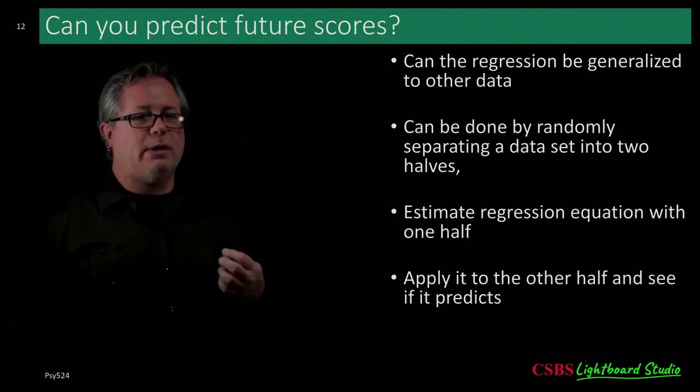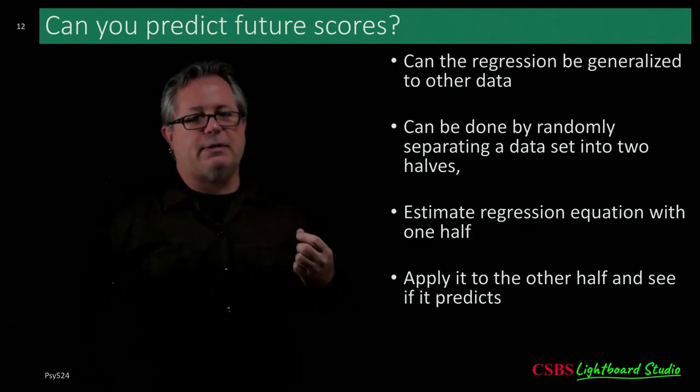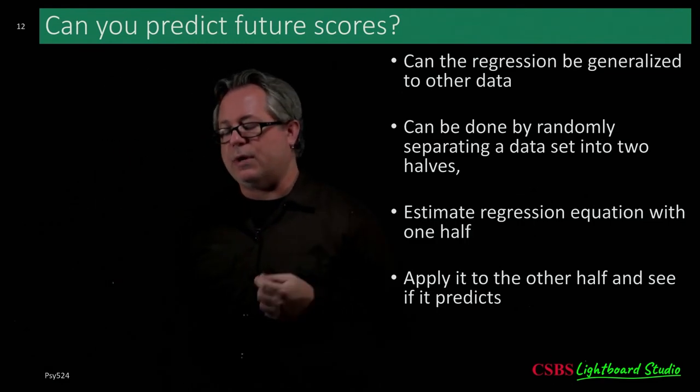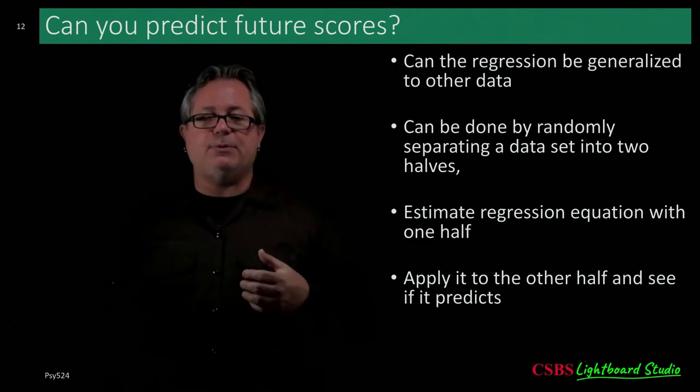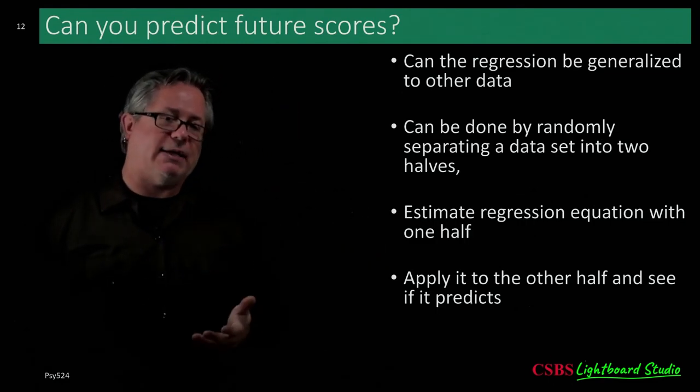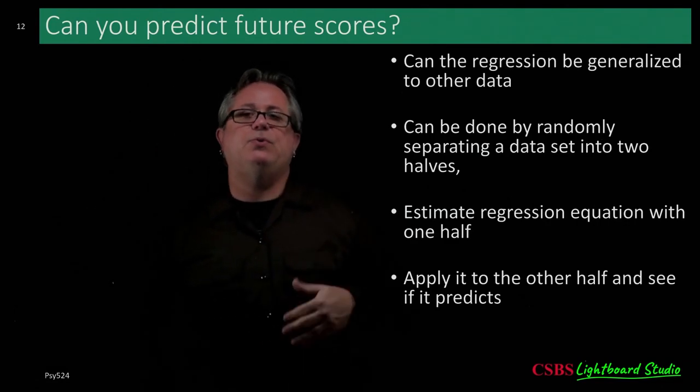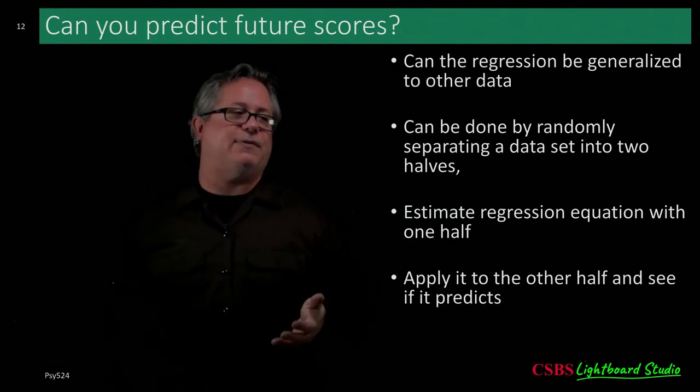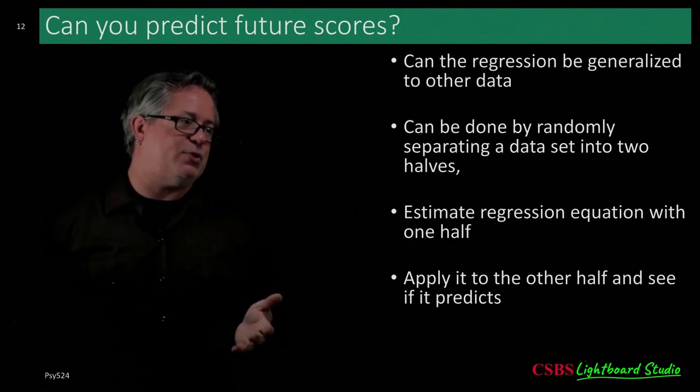Regression can also be used to predict future scores — using what you know from existing data to predict new incoming data. This is done, for instance, when graduate school applications are put into a prediction equation to predict how successful an applicant might be based on what's known about previous students.